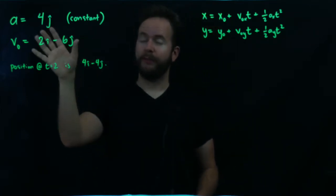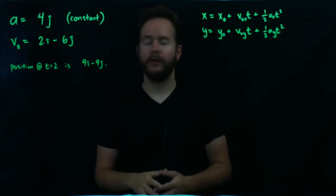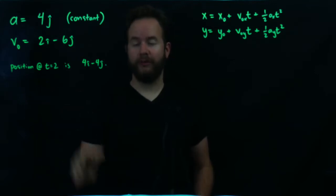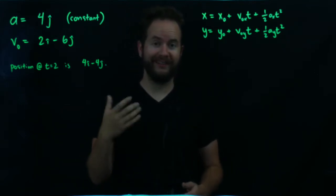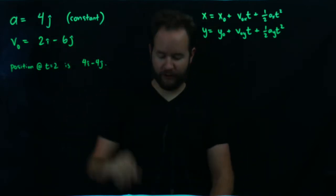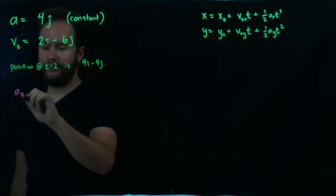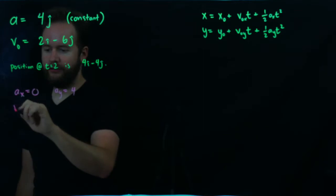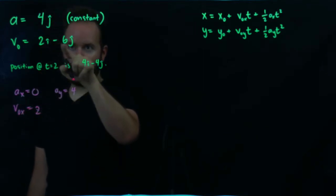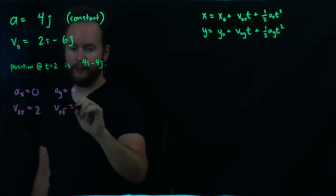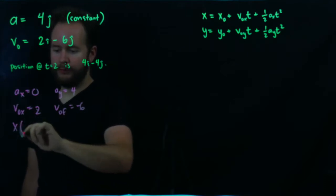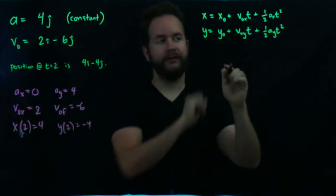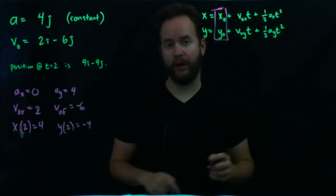Here we have a problem about a particle where we're given some information about that particle with regards to its acceleration, its velocity, and its position after 2 seconds. Our job is to backtrack to figure out where that particle's position is at 0 seconds — its initial position. So I'm going to rewrite the given info: ax equals 0, ay equals 4, the initial x-velocity is 2, the initial y-velocity is negative 6, and the position at t equals 2 is x of 2 equals 4 and y of 2 equals negative 4. Our goal is to find x naught and y naught.